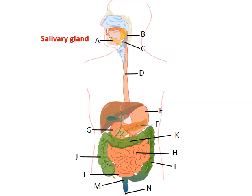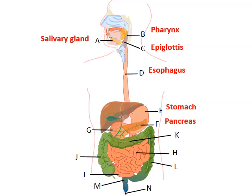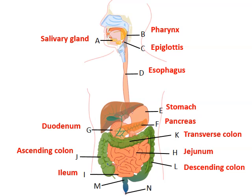To review the diagram: A is one of the salivary glands; B is the pharynx at the back of the throat; C is the epiglottis, the flap that covers the trachea; D is the esophagus; E is the stomach; F is the pancreas, behind the stomach; G is the duodenum, the first part of the small intestines; H is the jejunum, the middle part where most nutrients are absorbed; I is the ileum, the end of the small intestines; J is the ascending colon, the first part of the large intestines; K is the transverse colon; L is the descending colon; M is the rectum, which stores feces; and N is the anus, the muscular ring where feces is excreted. I hope you found this video helpful on this quick tour of the digestive system.